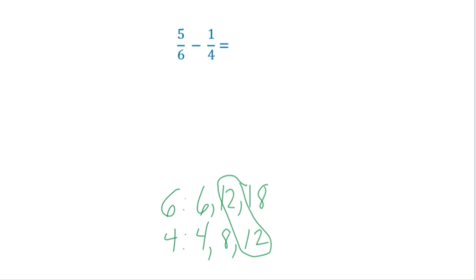So that's what I'm going to use as my common denominator. In order to make my 5 sixths have a denominator of 12, I'm going to multiply by 2 over 2, which is like multiplying by 1. So I would get 10 over 12. And for my second term, 1 fourth, to have a denominator of 12, I need to multiply by 3 over 3. 1 times 3 is 3, and 4 times 3 is 12.